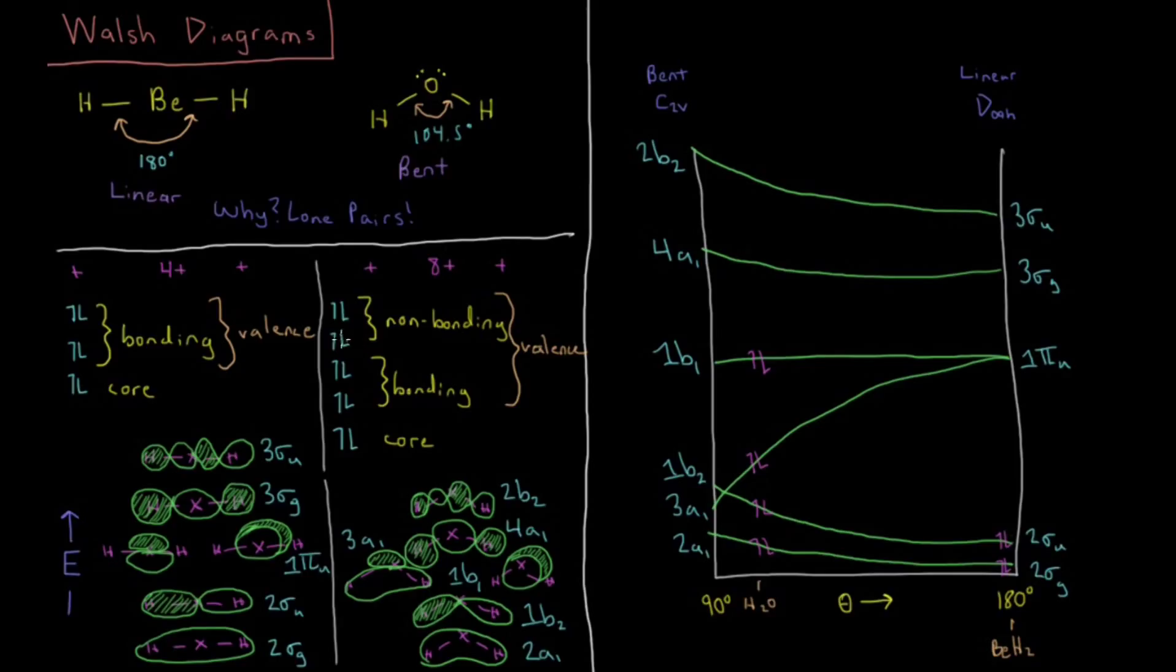So how does this make all the difference here? Well, if we look at a molecular orbital diagram of beryllium hydride and water, we can draw something like this.